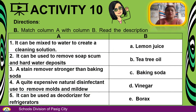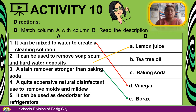Match Column A with Column B. Read the description. Number 1: It can be mixed with water to create a cleaning solution — D. Vinegar. Number 2: It can be used to remove soap scum and hard water deposits — A. Lemon juice. Number 3: A stain remover stronger than baking soda — E. Borax. Number 4: A quite expensive natural disinfectant used to remove molds and mildew — Tea tree oil. Number 5: It can be used as a deodorizer for refrigerators — Baking soda.